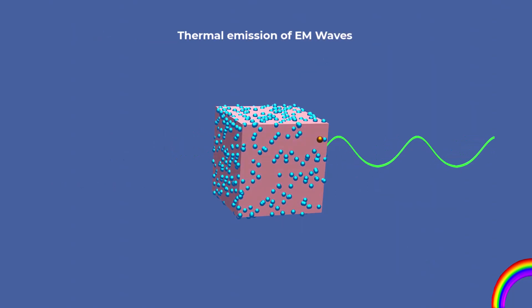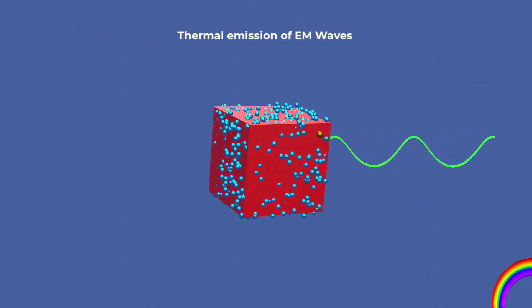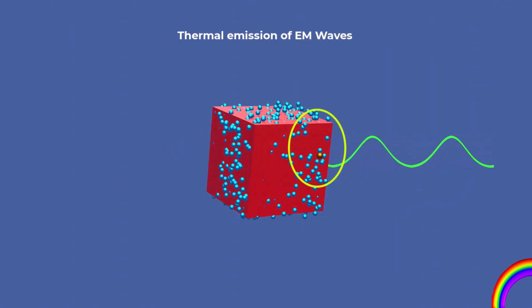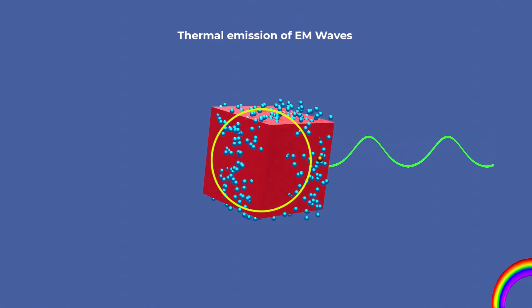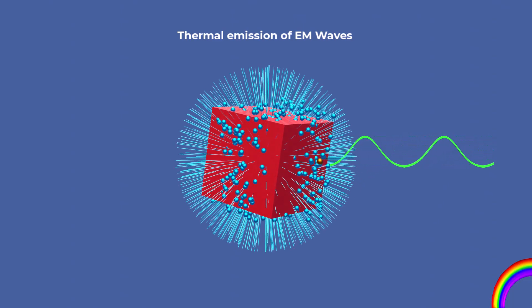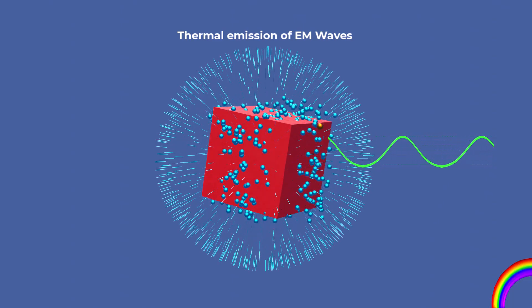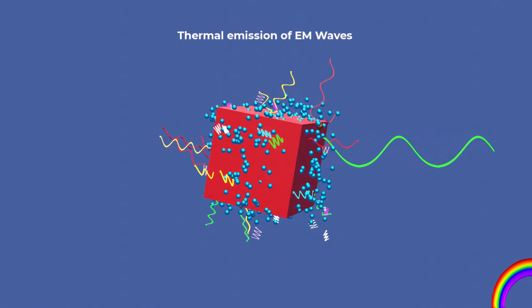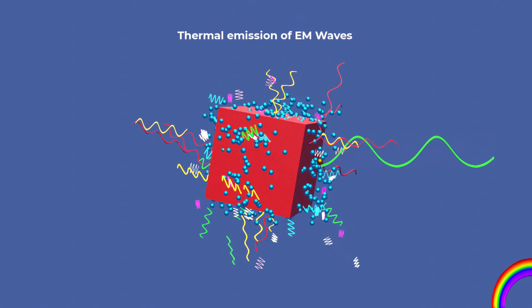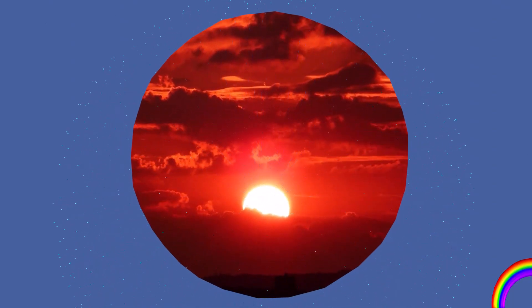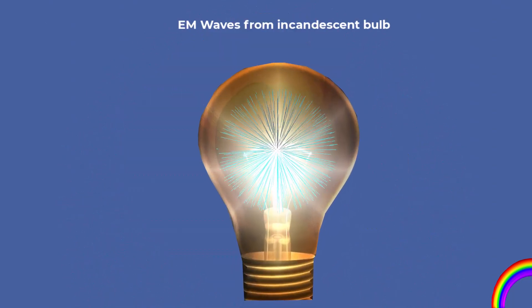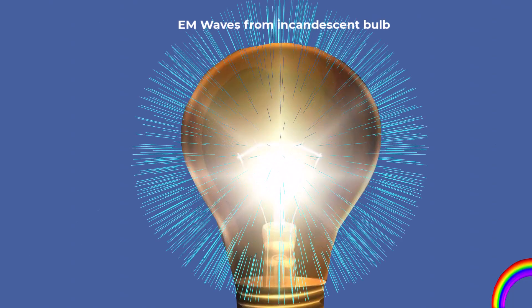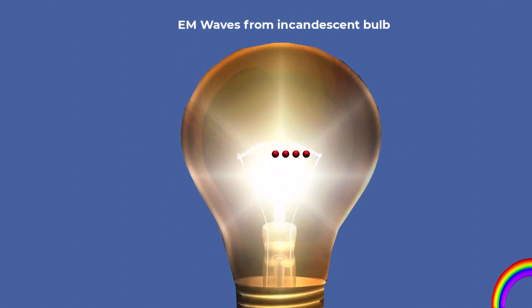At higher temperatures, charged particles in matter vibrate randomly. These random accelerations generate electromagnetic waves over a broad range of frequencies, known as thermal radiation. The sun emits EM waves through thermal processes, and incandescent bulbs glow because heated filament electrons vibrate, radiating visible light.